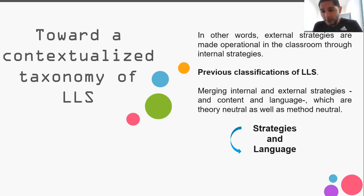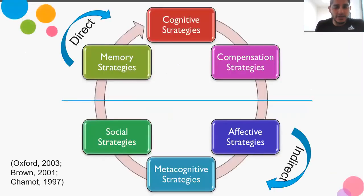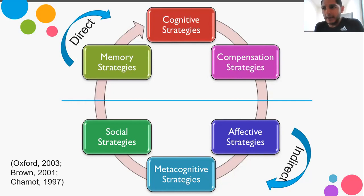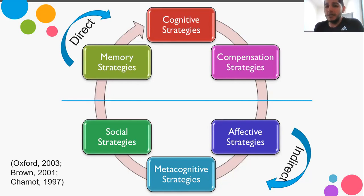Rather than following a specific theory, we follow an eclectic approach. Let's explore what I checked with one of the most relevant taxonomies on language learning strategies proposed by Oxford. It's divided into direct and indirect strategies. On one hand, you have memory-related strategies, cognitive strategies, and compensation strategies more related to cognition. On the other hand, you have indirect strategies where you can find social, affective, and metacognitive strategies with regard to organization, the affective domain, the emotional dimension, and how to interact with more knowledgeable peers, which basically has to do with collaborative work.